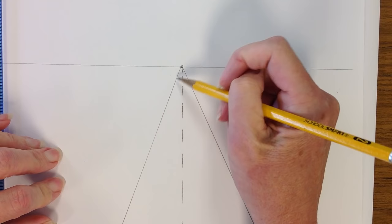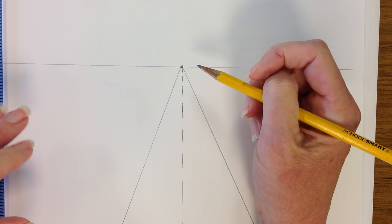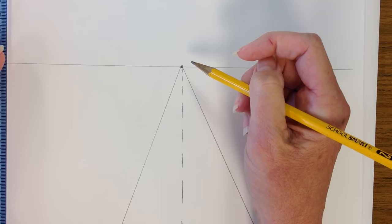These lines are called converging because they go towards the vanishing point. The next thing we want to do is maybe I can add a sidewalk to mine.